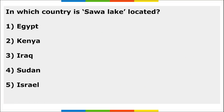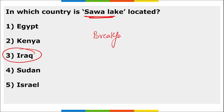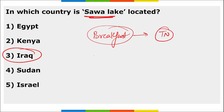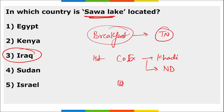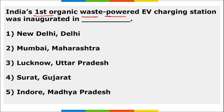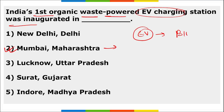Sava Lake is located in Iran. The Breakfast Scheme for government school children was launched by Tamil Nadu. The first Centre of Excellence for Khadi and a museum specifically for former Prime Ministers of India are both located in New Delhi. India's first organic waste-powered electric vehicle charging station was inaugurated in Mumbai, Maharashtra, powered by biogas, and will also power street lights.